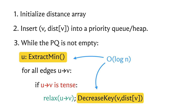Every vertex is extracted at most once, and every edge is relaxed at most once, triggering at most one decrease-key operation per edge. Overall, the total complexity is O((m + n) log n), and since m dominates n asymptotically, this simplifies to O(m log n). With m and n both in the order of ten thousands, this complexity works fine for this problem.